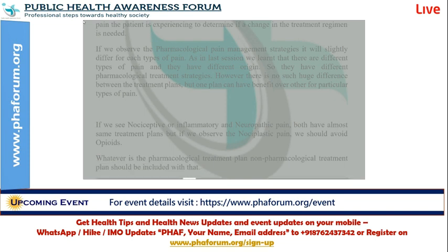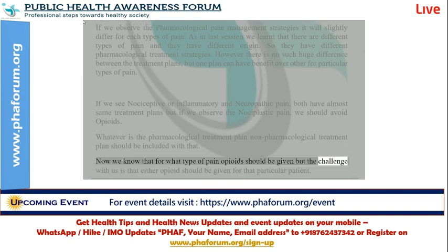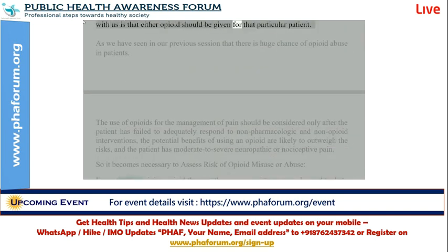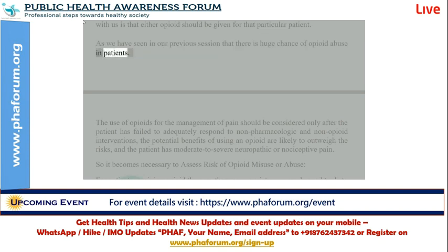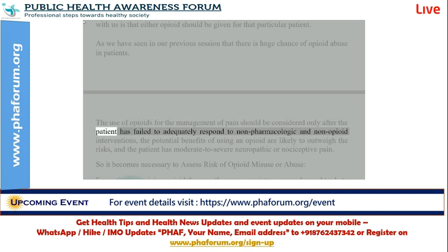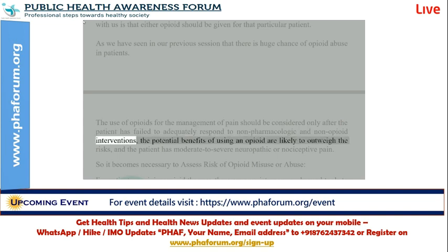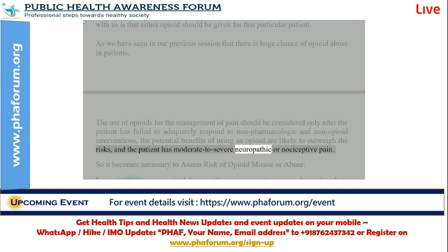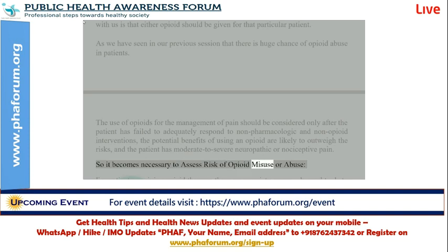Now we know for what type of pain opioids should be given, but the challenge is whether opioids should be given for a particular patient. As we have seen, there is a huge chance of opioid abuse in patients. The use of opioids for the management of pain should be considered only after the patient has failed to adequately respond to non-pharmacologic and non-opioid interventions, the potential benefits are likely to outweigh the risks, and the patient has moderate to severe neuropathic or nociceptive pain.